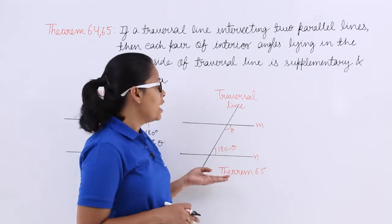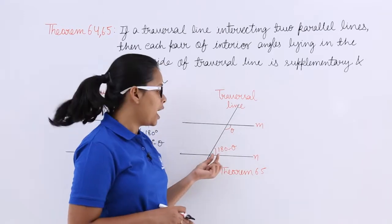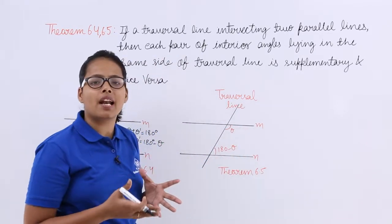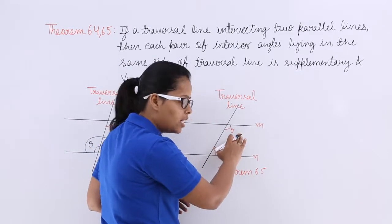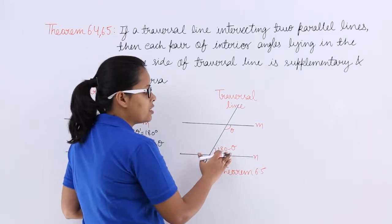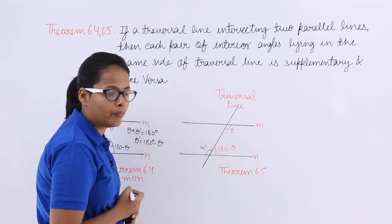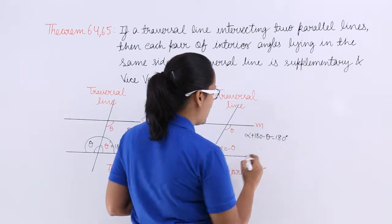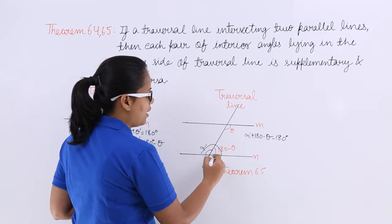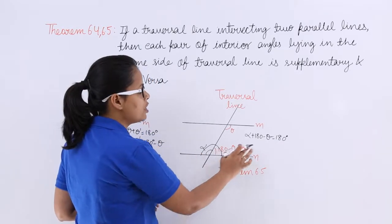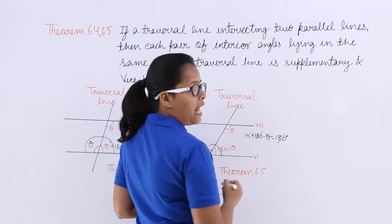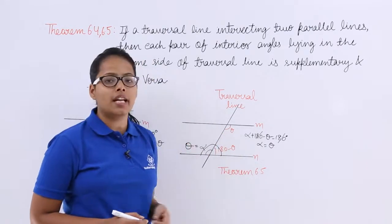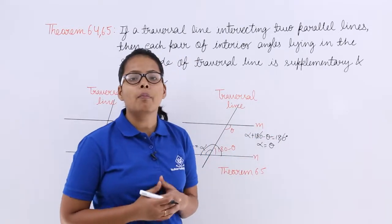Now let's see the vice versa. If a transversal line makes an angle theta and 180 degrees minus theta with lines M and N, it has not been given that these two lines are parallel. But it has been given that this angle is theta and this angle is 180 minus theta. Suppose the adjacent angle is alpha. The sum of alpha plus 180 degrees minus theta equals 180 degrees, because this is a straight angle. So 180 degrees cancels out, giving alpha equal to theta. When two alternate interior angles are equal, then M and N will become parallel to each other.